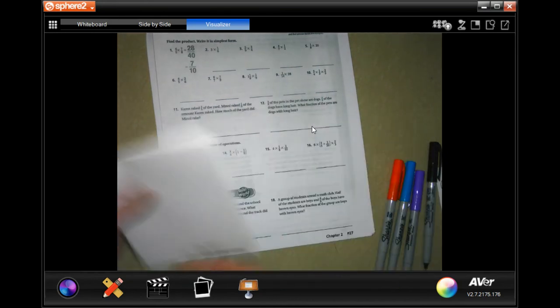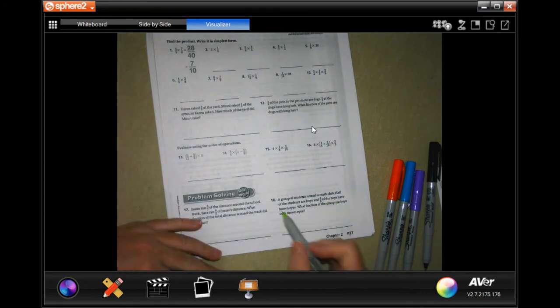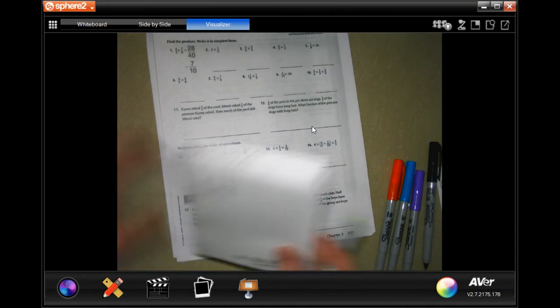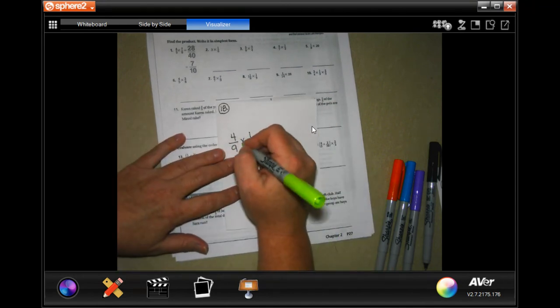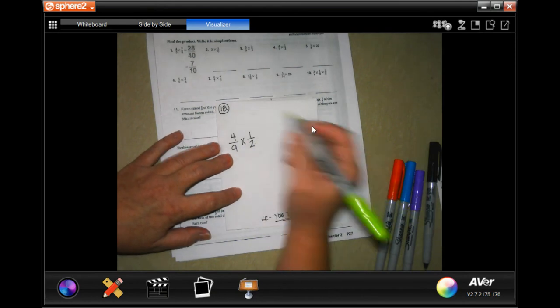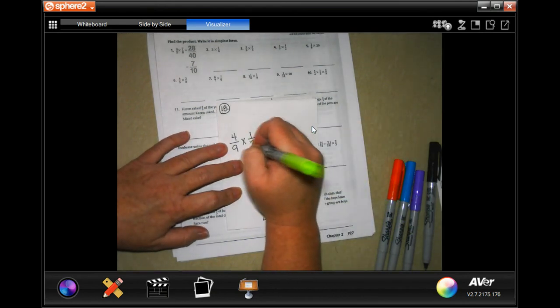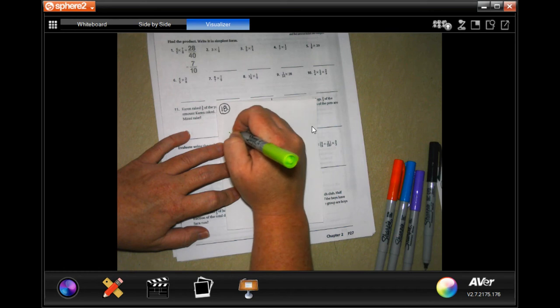Number 18 says, a group of students attended a math club. Half of those students are boys, and 4/9 of, so 4/9 of 1/2 have brown eyes. What fraction of the group have brown eyes? So 4/9 of the 1/2 that are boys. 2 goes into 2 once, 2 goes into 4 twice.